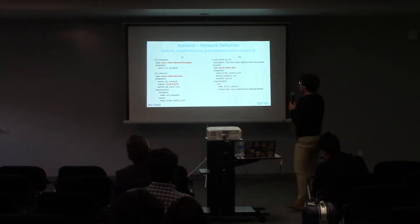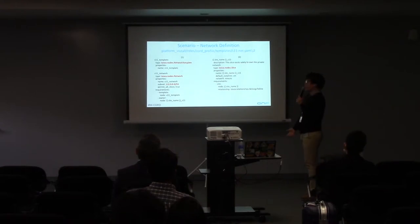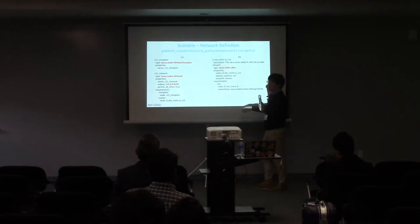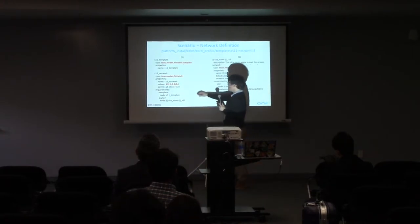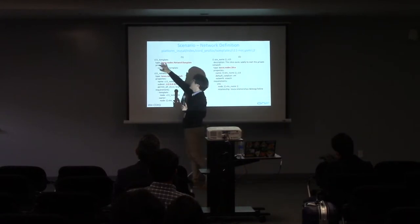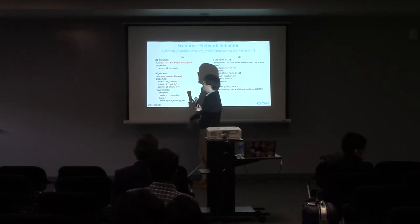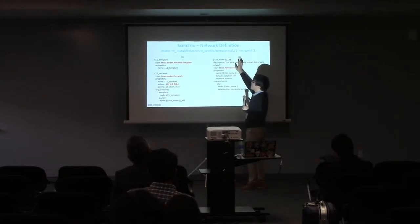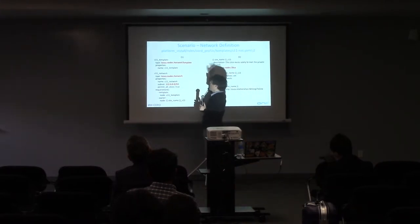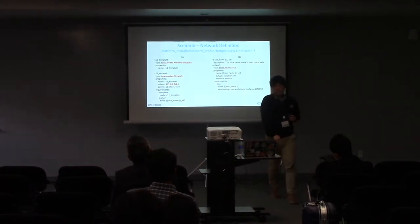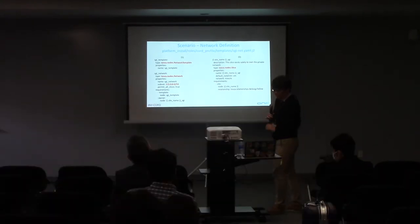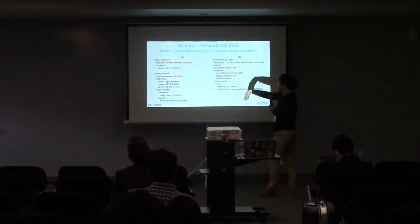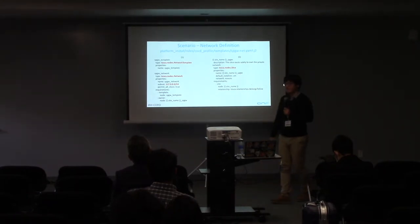The remaining work is to define three more networks: S11, SGI, and SP Gateway. It is the same pattern as before — just copy, paste, and change the label and IP address. Each has three parts: network template with label, type, and properties; network with label, type, and IP address; and slice with label, description, type, properties, and requirements where you register both network template and slice. SP Gateway network is also the same — three sections, write the IP address, and register template and slice. You have now defined all four networks.